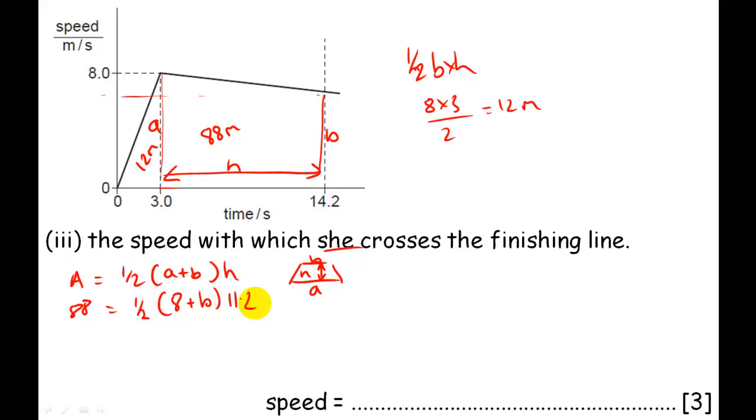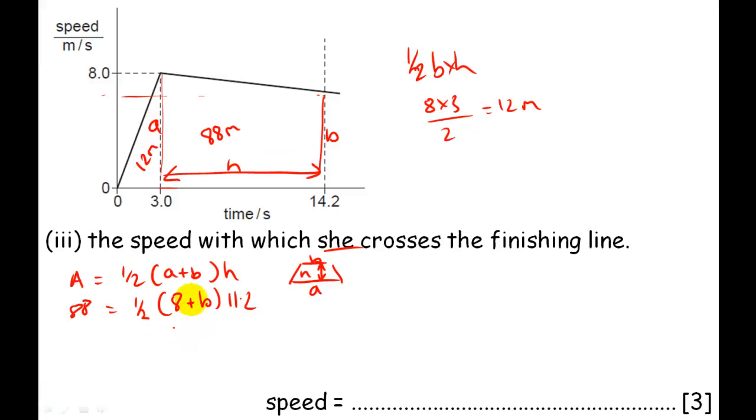So now it's just a case of tidying this equation up. So I could multiply out the eleven point two and by the half as well. Let's just do it the long way. Eleven point two times eight is going to give me eighty-nine point six plus eleven point two b. Okay, so divide these both by two now as well.